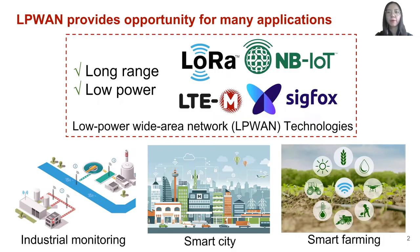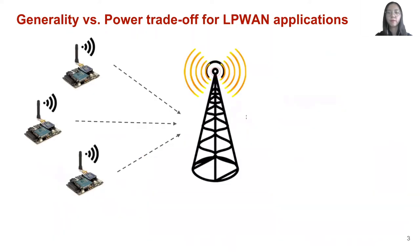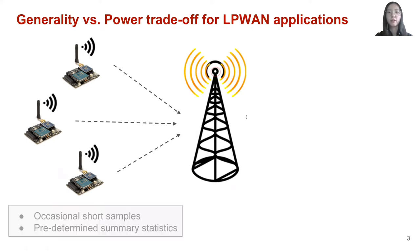Low-Power Wide Area Network is an emerging network technology that offers long-range and low-power communication. This technology provides opportunity for many applications, such as industrial monitoring, smart city, and smart farming. Among all these applications, low-power sensors are collecting and transmitting important information to the base station. Due to the power constraint, sensors today either communicate occasional short samples or predetermine summary statistics.